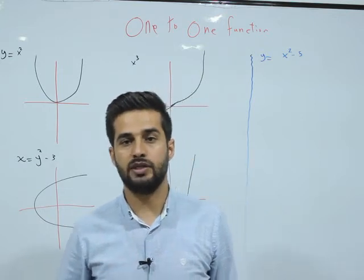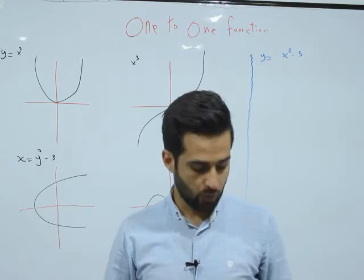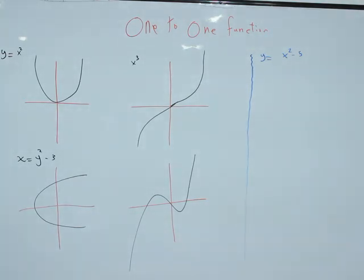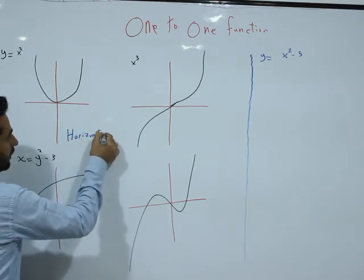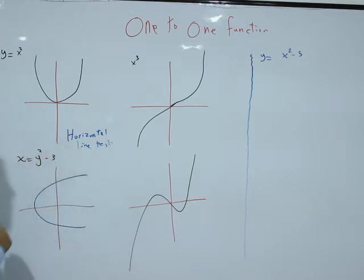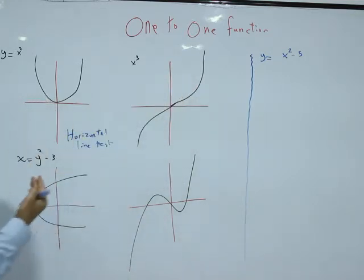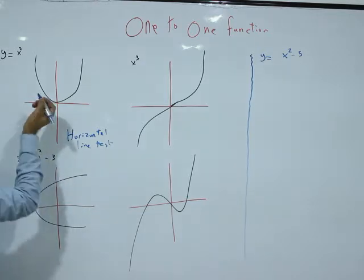Hello students. How can I know that a function is one-to-one or not? We have an idea for finding a one-to-one function graphically. How can I know that this is a one-to-one function? By a horizontal line test. This test is called the horizontal line test. If we sketch many horizontal lines on this graph and it touches the graph at least two times, it will be a not-one-to-one function.